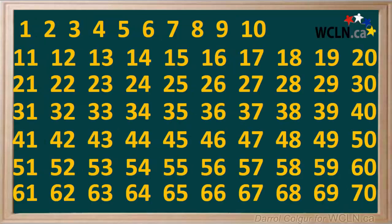Here's a list of numbers from 1 to 70. Of these, the perfect squares are: 1, whose square root is 1; 4, whose square root is 2; 9, whose square root is 3; 16, whose square root is 4; 25, whose square root is 5; 36, whose square root is 6; 49, whose square root is 7; and 64, whose square root is 8.